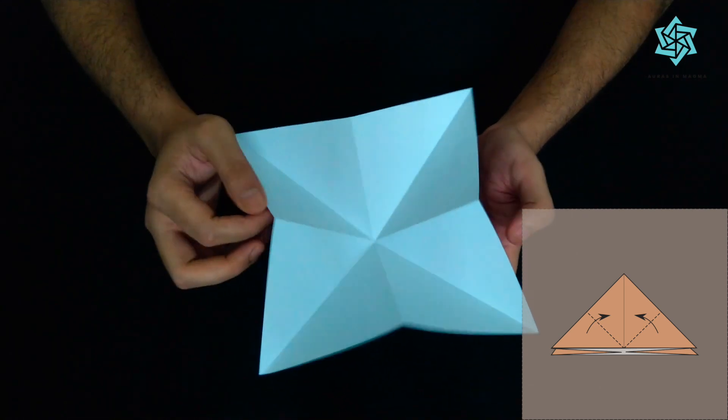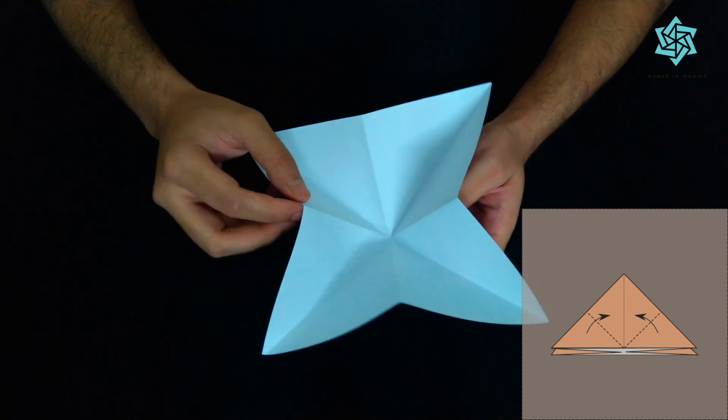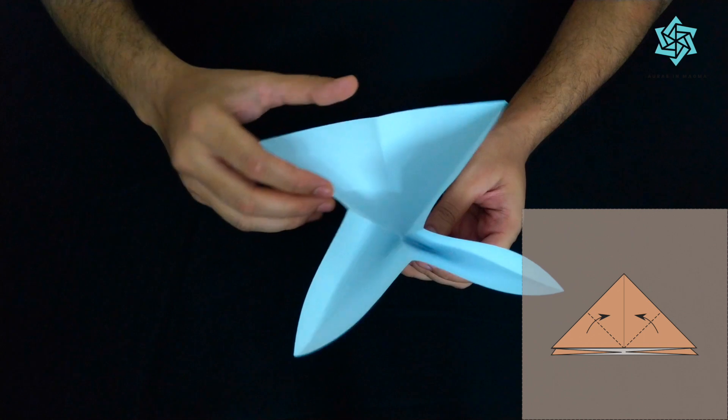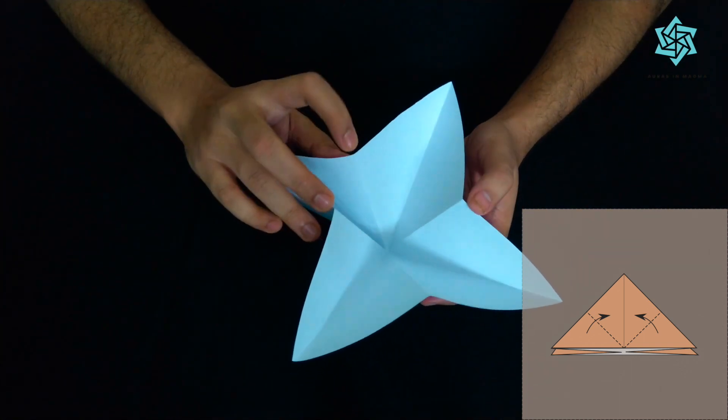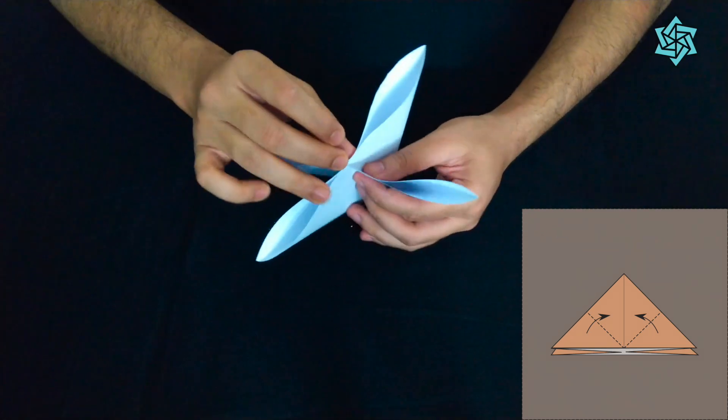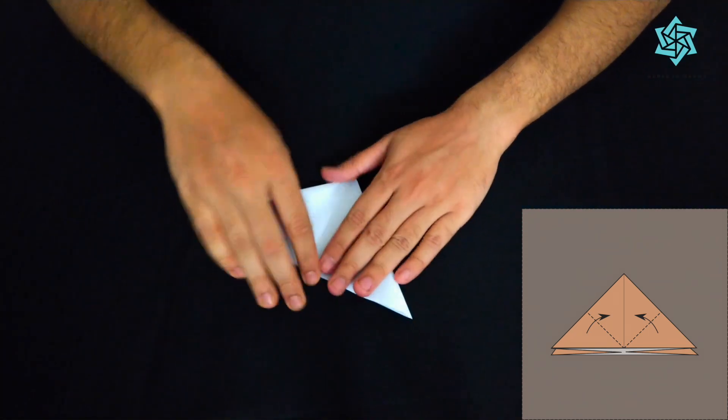I'll do this again. This is a very simple process and I suppose most of you might have already made a water bomb before. So we just bring all these four points which the plus is making together and there we get the water bomb.